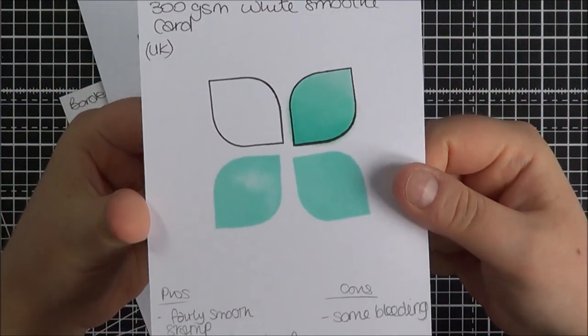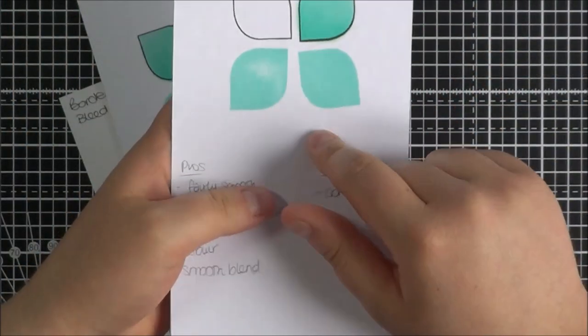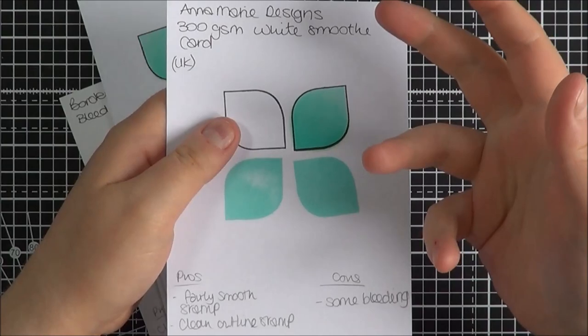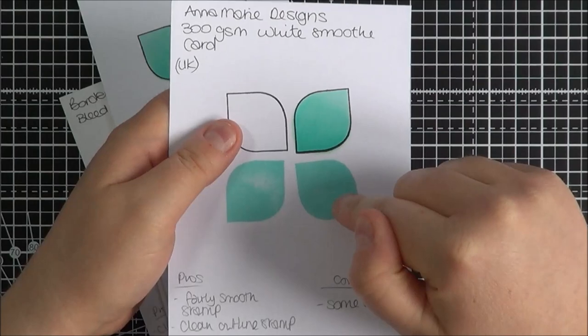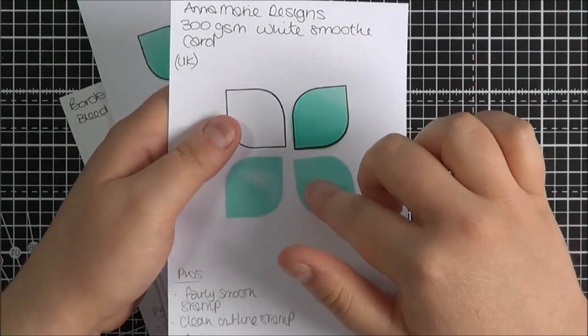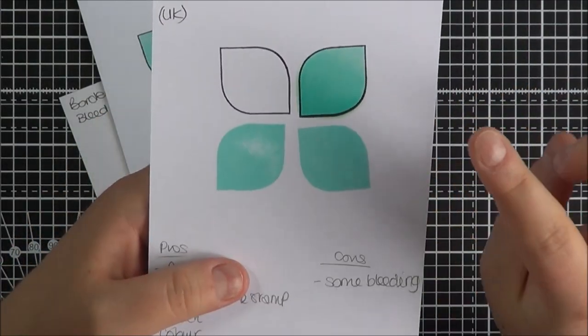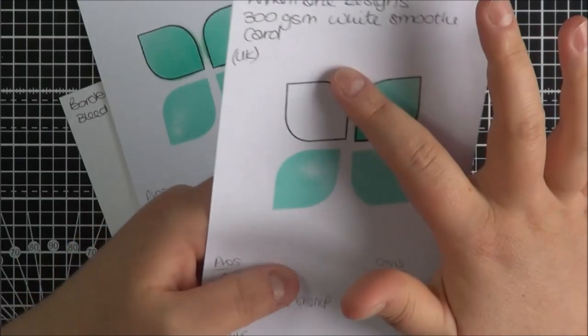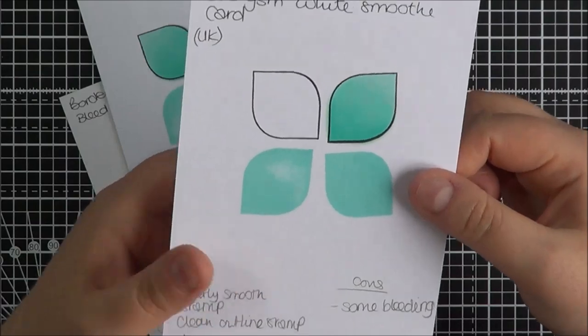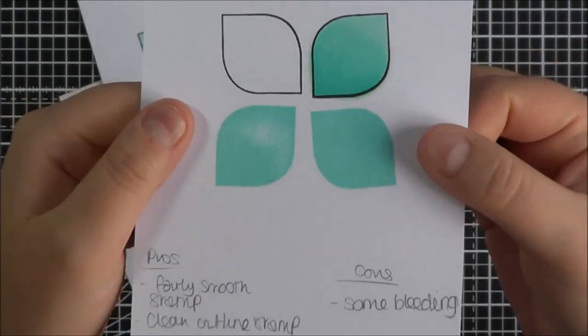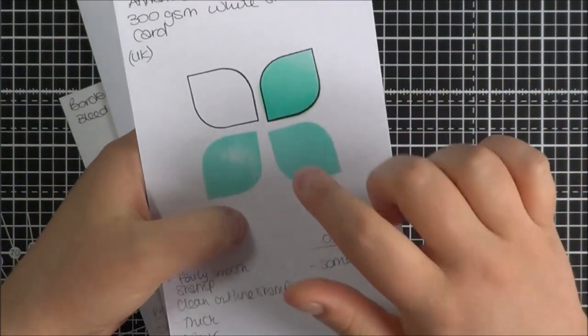I then got some of the Anna Marie Designs 300 GSM White Smooth Card. Again I've heard really good things about this. It's kind of made I suppose for alcohol markers although I believe it works a lot better on Pro markers than Copic markers. Stamp wise this one didn't stamp out too well. This one not too bad. The black outline stamped quite well. Really nice smooth Copic markers there. Quite a lot of bleeding. It's nice and thick.